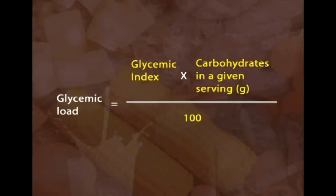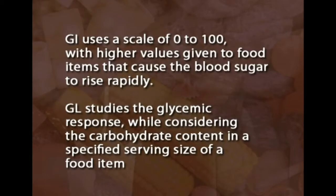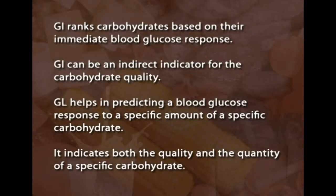For a single serving: a GL greater than 20 is considered high; 11–19 is medium; and 10 or less is low. The higher the GL of a food, the greater the expected rise in blood glucose and the greater the adverse insulin effects. Consistently eating low-GL foods evens out blood sugar peaks and valleys, keeping appetite and weight under control. Eating low-GL foods can also reduce the risk of developing type 2 diabetes. GI uses a scale of 0–100, with higher values indicating more rapid blood sugar rise.